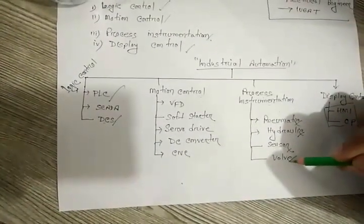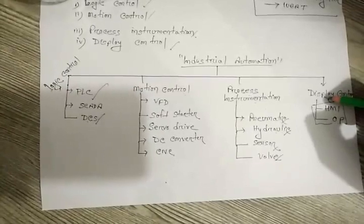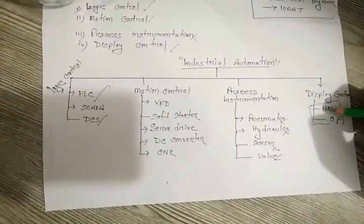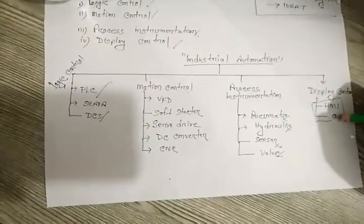And at the end of the section is display control. Display control is divided into mainly two parts. HMI which is called human machine interface and opcode.